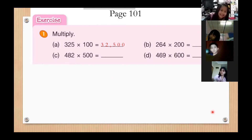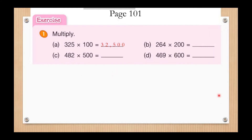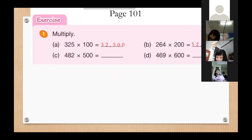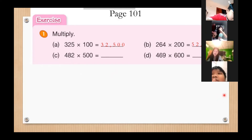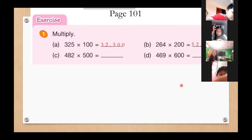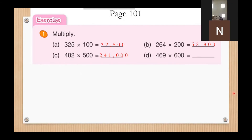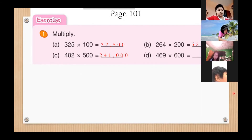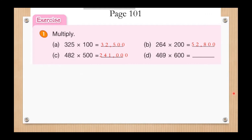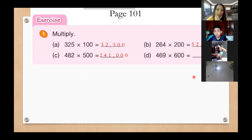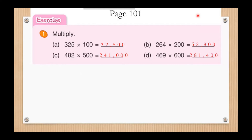Popa 2, the product for letter A is thirty-two thousand five hundred. Very good, EQ girl. Thank you. Next, letter B — who wants to answer? Popa 2: fifty-two thousand eight hundred. Very good, thank you. Letter C: Tonkow answers two hundred forty-one thousand. Very good, thank you. And letter D: two hundred eighty-one thousand four hundred. Very good.